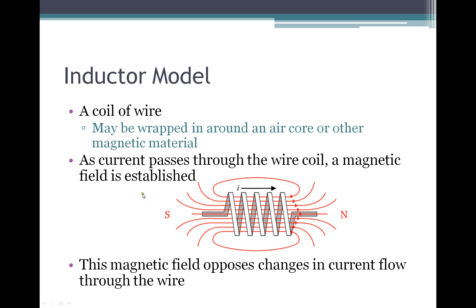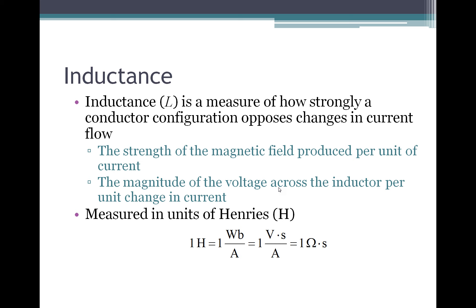We start passing current from left to right and generate this magnetic field. The magnetic field strength is changing, and because that magnetic field strength is changing, we get an induced or backwards EMF — a backwards current flow — that opposes the current flow we're passing through the wire. So it takes time to build up and fully establish this magnetic field. Inductance is a measure of how strongly a conductor configuration opposes the change in current, and it's a measure of the strength of the magnetic field produced per unit amp of current passed through the wire.